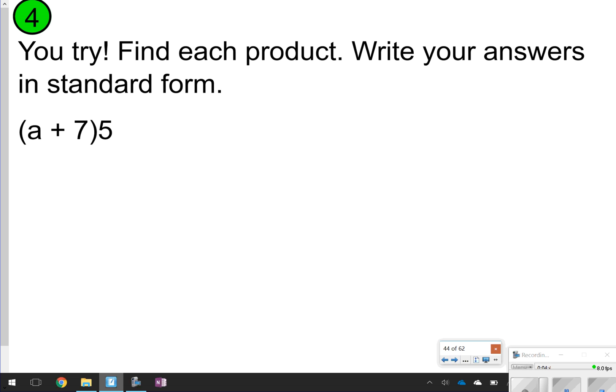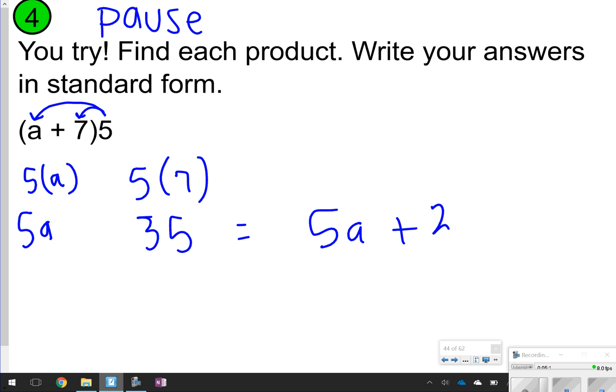Number 4, same thing. Pause the video, try it, and once you're done, click play. So here we are. We're going to distribute 5 times A and 5 times 7. 5 times A is 5A. 5 times 7 is 35. Together they will make 5A plus 35. Can't simplify anymore just because those are not like terms.